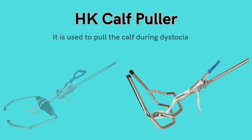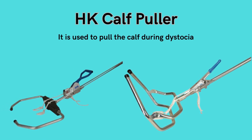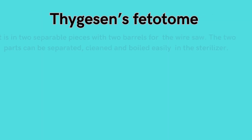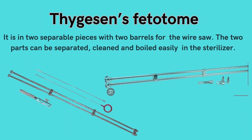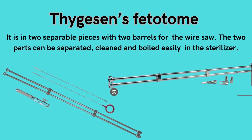HK calf puller: used to pull the calf during dystocia. Thigazin's fetatome: it is in two separable pieces with two barrels for the wire saw. The two parts can be separated, cleaned, and boiled easily in the sterilizer.